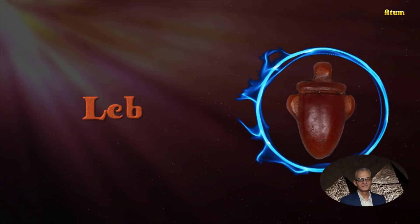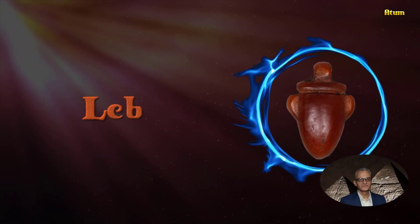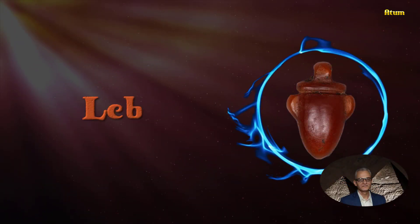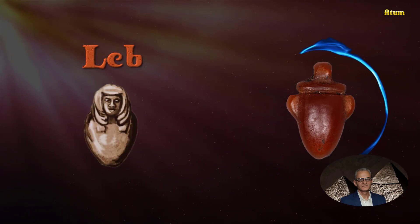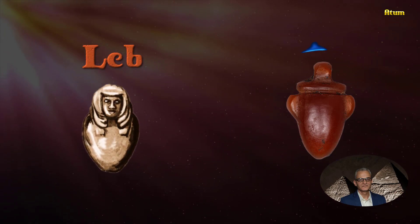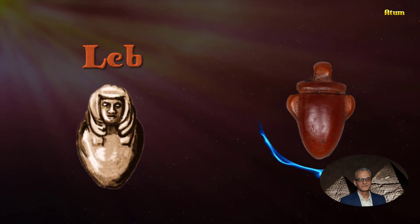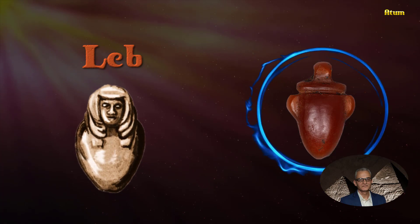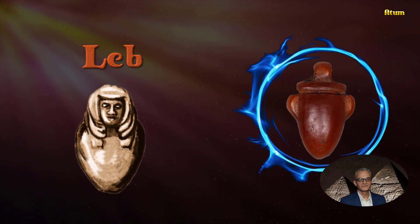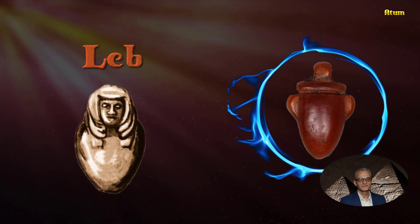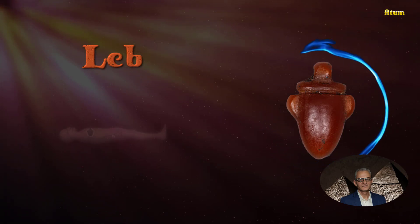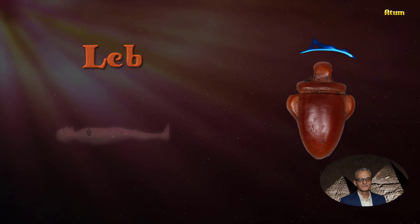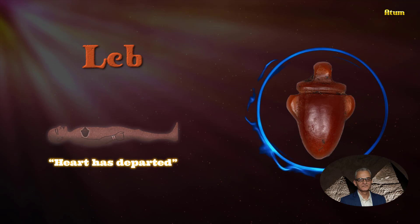The Leb symbol represents a heart. The Egyptians believed the heart was the center of all consciousness, even the center of life itself. When someone died, it was said that their heart has departed.